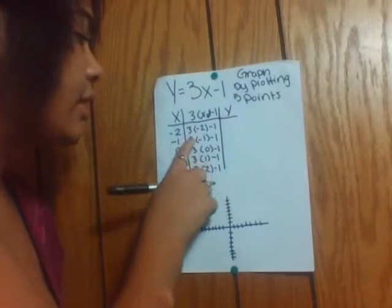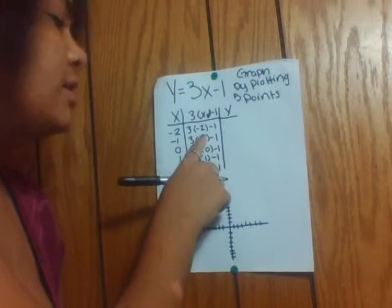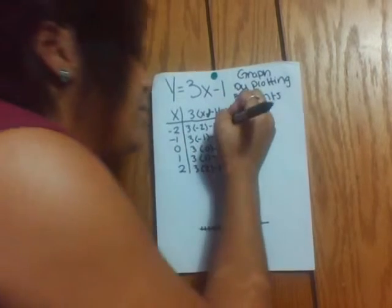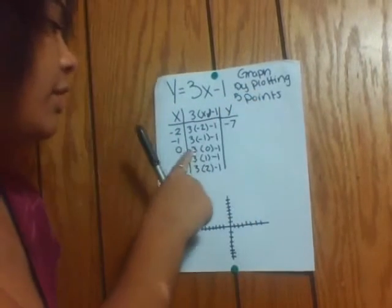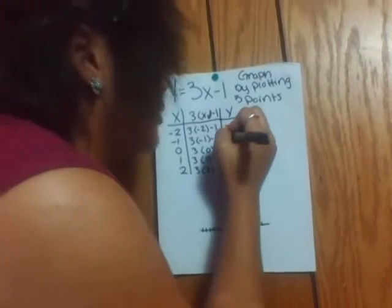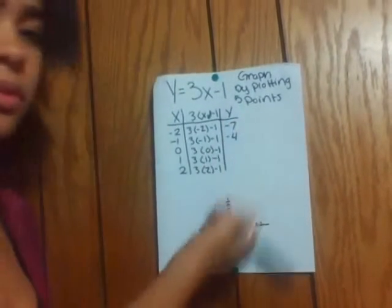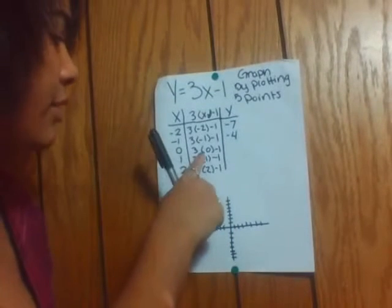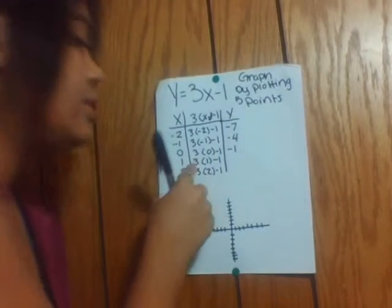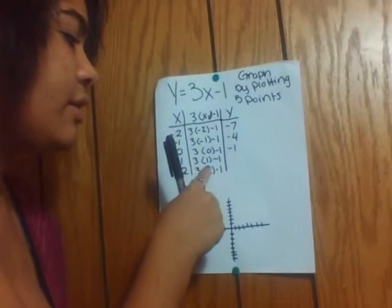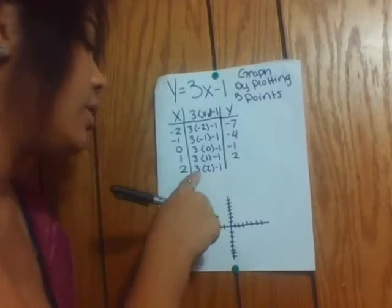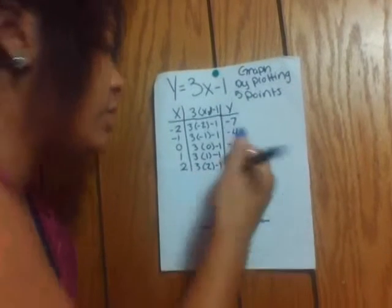So 3 times negative 2 is negative 6, minus 1 is negative 7. 3 times negative 1 is negative 3, minus 1 is negative 4. 3 times 0 is 0, minus 1 is negative 1. 3 times 1 equals 3, minus 1 is 2. And 3 times 2 is 6, minus 1 is 5.